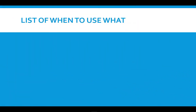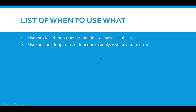Here's a list that should help with when you use what. You use the closed loop transfer function — specifically the characteristic equation — to analyze stability using the Routh-Hurwitz criteria, which will be covered in another video. You use the open loop transfer function to analyze steady state error. You also use the open loop transfer function to start the root locus: you get the open loop poles and the open loop zeros, and those are the beginning of the diagram called the root locus.